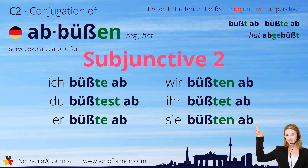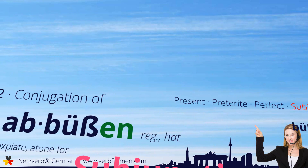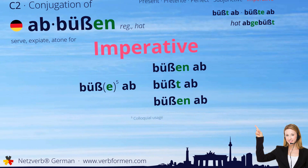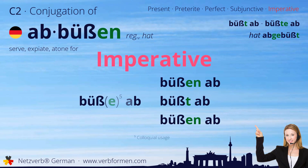And finally, we'll cover the imperative. Büße ab, du. Büßen ab, wir. Büßt ab, ihr. Büßen ab, sie.